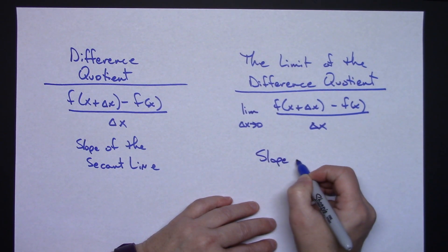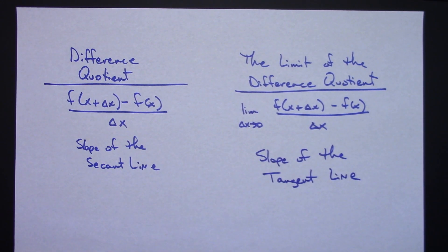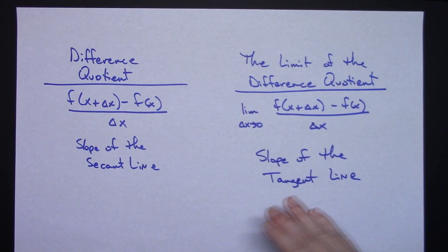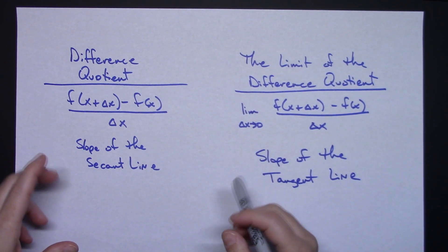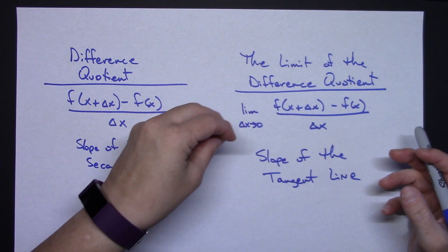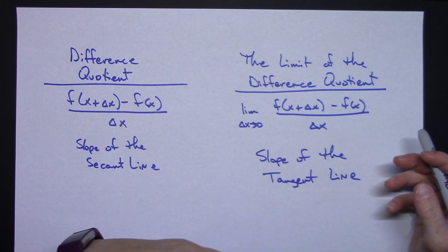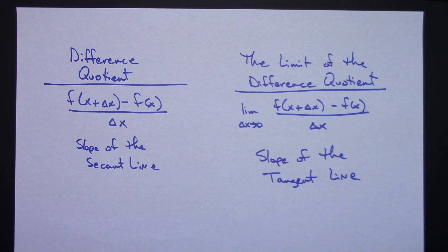As we let Delta x approach zero — picking Q's closer to P — the slope of those secant lines was getting closer and closer to the slope of the tangent line. So when we take the limit of the difference quotient, we get the slope of the tangent line. This is a good foundation for leading into what a derivative is. If you have a solid background in what the difference quotient really represents — it comes from the slope of the secant line — then applying the limit process leads us to the slope of the tangent line, which is where we're going when we introduce the definition of a derivative. Thanks for watching!